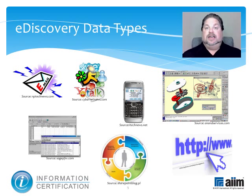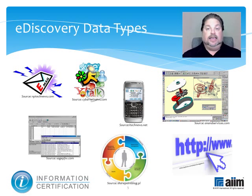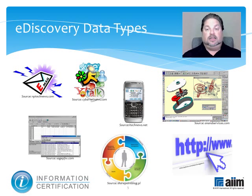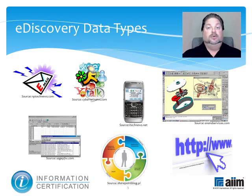Examples of the types of ESI included are emails, instant messaging chats, documents, accounting databases, CAD/CAM files, websites, and any other electronic information that could be relevant evidence in a lawsuit. Also included in eDiscovery are raw data and metadata, which forensic investigators can review for hidden evidence.